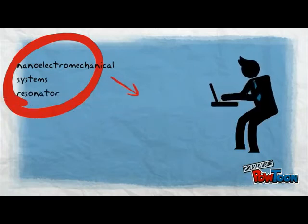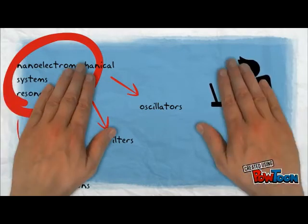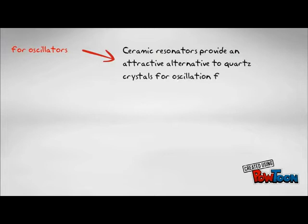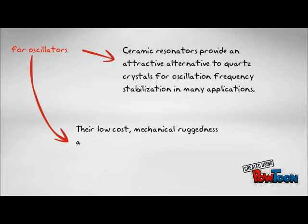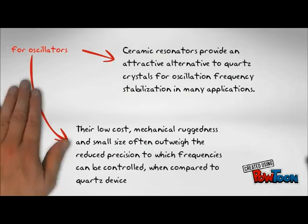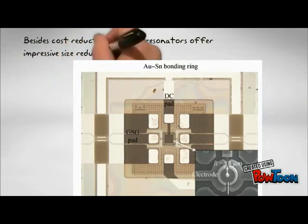NEMS resonators have three main applications: oscillators, filters, and sensors. NEMS resonator oscillators use ceramic instead of quartz crystals because of their low cost, mechanical ruggedness, and frequency stabilization in many applications. Ceramic also provides small size in order to achieve fabrication on nano scale, which is our main goal.